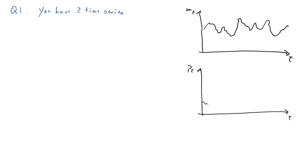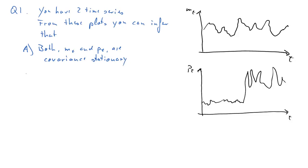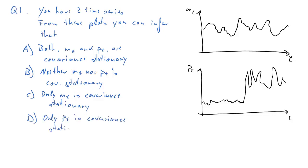Here is the multiple choice question to test your understanding. You have two time series, which I shall sketch here. So this is the first one, we call that MT. And here comes the second, we call it PT. Two time series, it's not important how long they are, what exactly they are. From these plots, can you infer that A, both MT and PT are covariance stationary? B, neither MT nor PT are covariance stationary? C, only MT is covariance stationary? Or D, only PT is covariance stationary? So pause the clip and think.